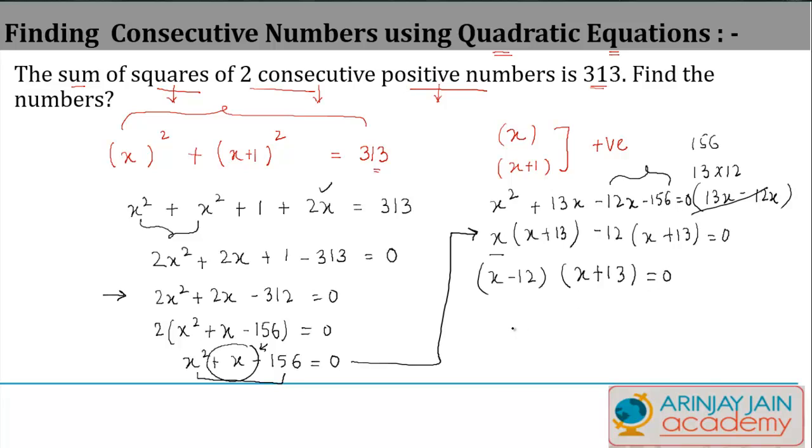Now either x - 12 = 0 or x + 13 = 0, which gives me two values for x: x = 12 or x = -13.